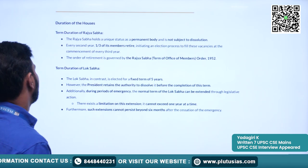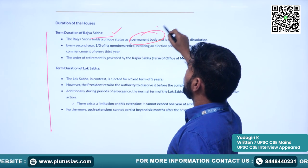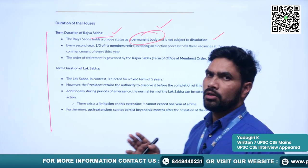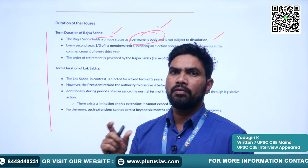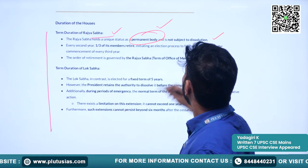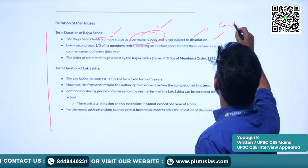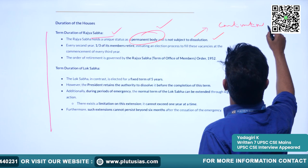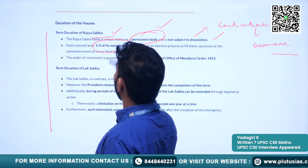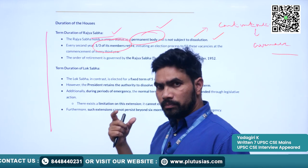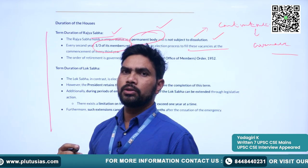Next we will understand the duration of the houses. When it comes to Rajya Sabha, it is a permanent and continuous body — it is not subject to dissolution. Please try to remember this point. Rajya Sabha has been kept as a permanent body to ensure continuity in legislation and the governance process. Every two years, one third of the members of the Rajya Sabha will retire, and there will be elections to fill those posts.